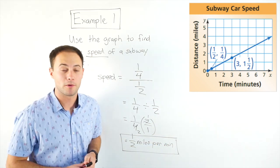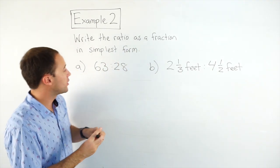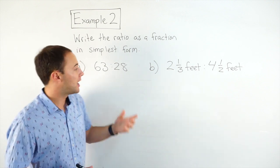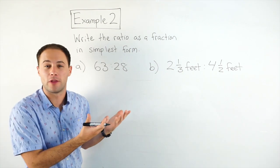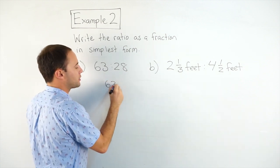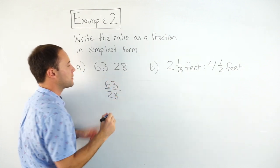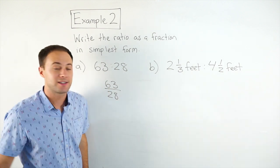Let's try another example. Example two. Write the ratio as a fraction in simplest form. So here we have some ratios. They're not written as fractions, so we've got to do that first. Remember, we can do that with ratios. So 63 to 28, I'm going to write that as 63 over 28. Remember, the first number, that goes into your numerator.